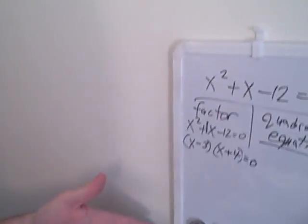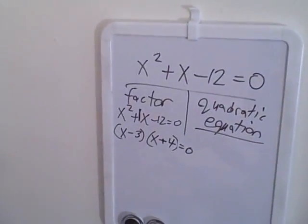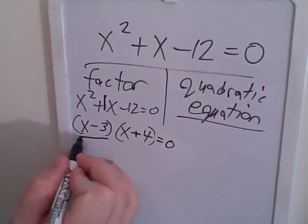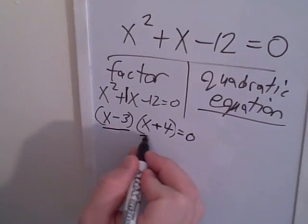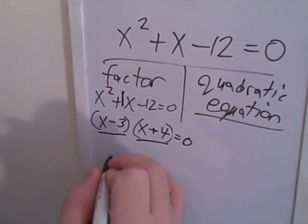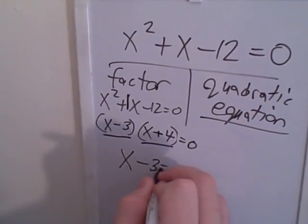So what that really means in layman terms is either that term will be 0 or that term will be 0. We don't know which one is which. So I'm just going to do x minus 3 equals 0, x plus 4 equals 0.